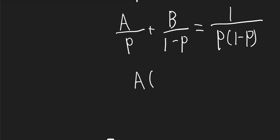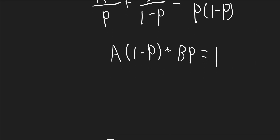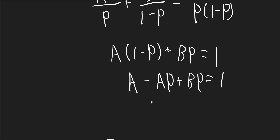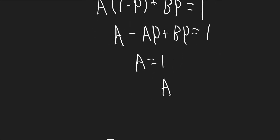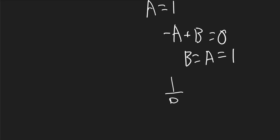So it'll be A times (1 - p) plus B times p is equal to 1. Expanding: A - Ap + Bp = 1, so A is equal to 1. The coefficient of p gives -A + B = 0, so B equals A, which is equal to 1.